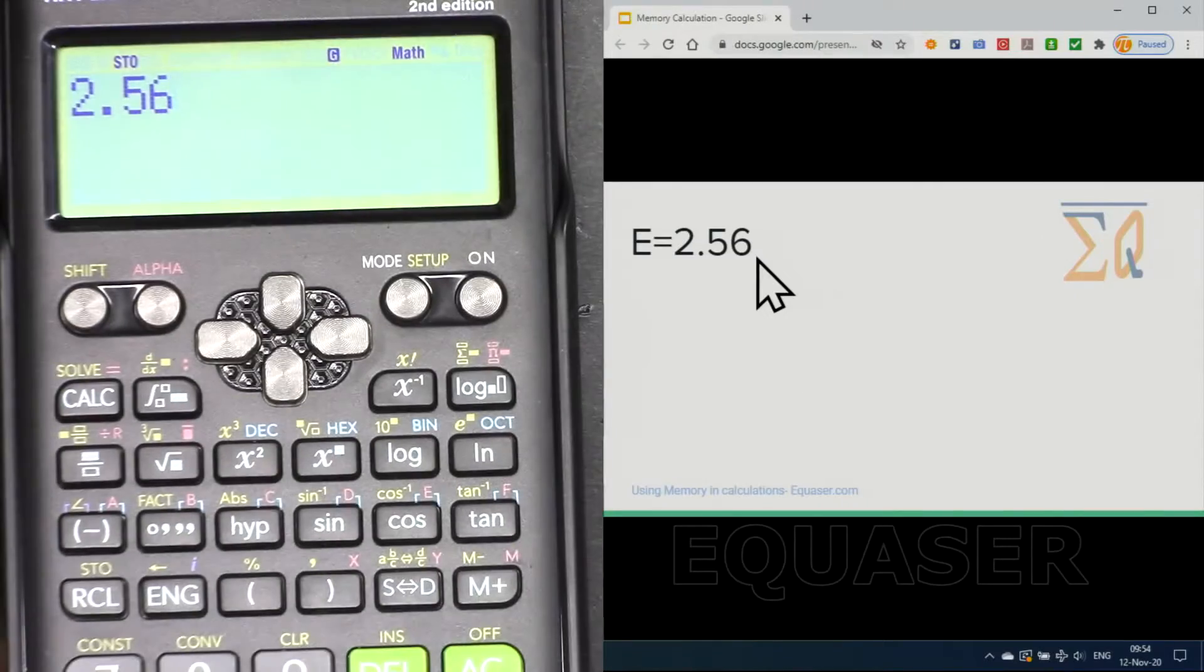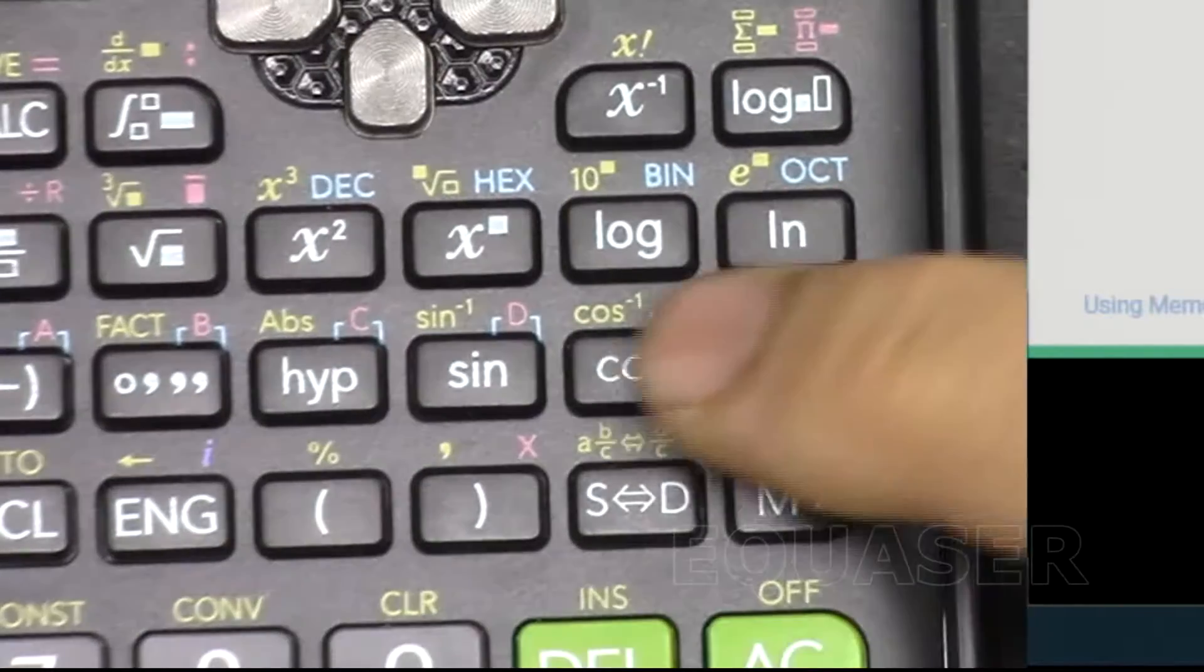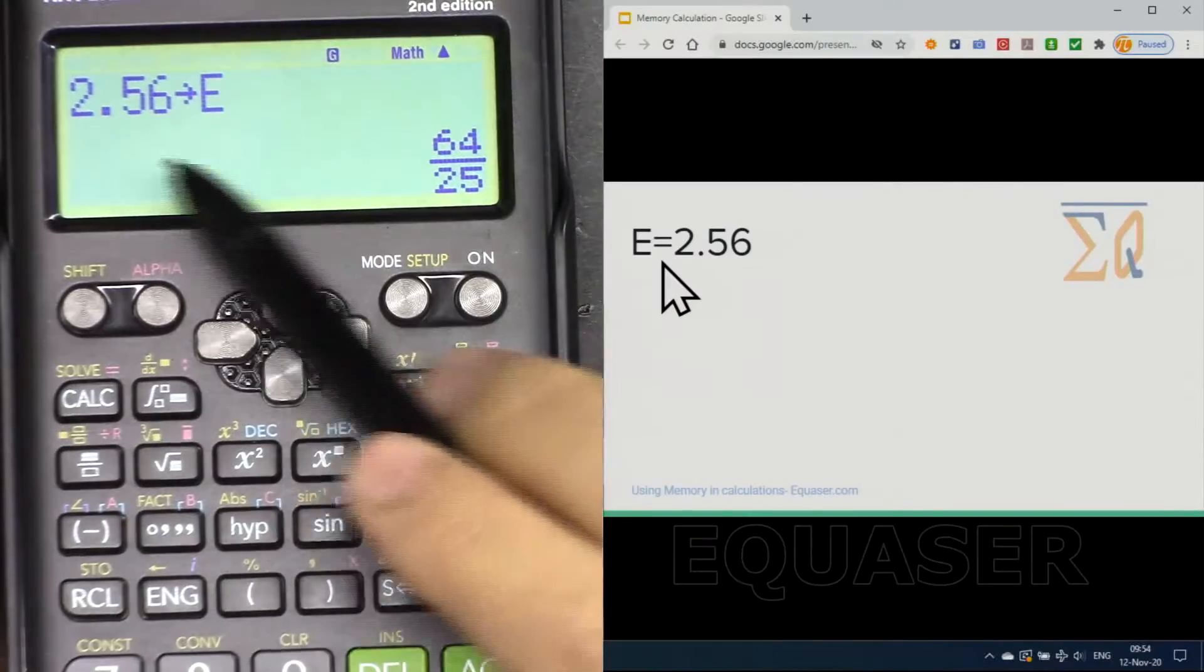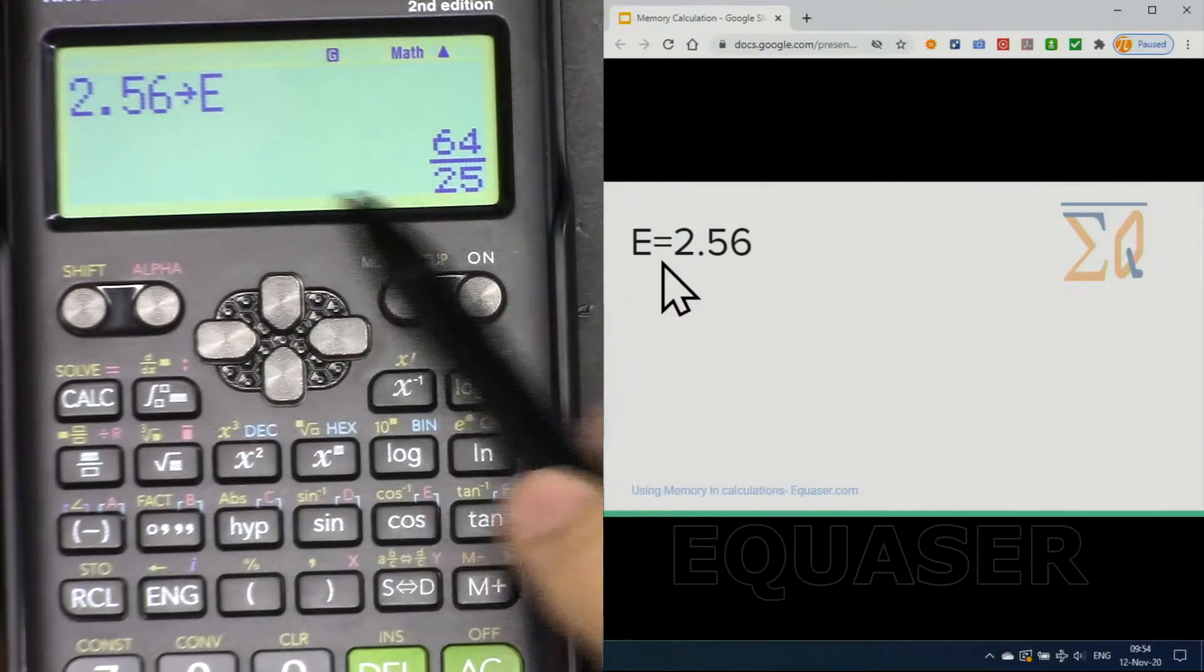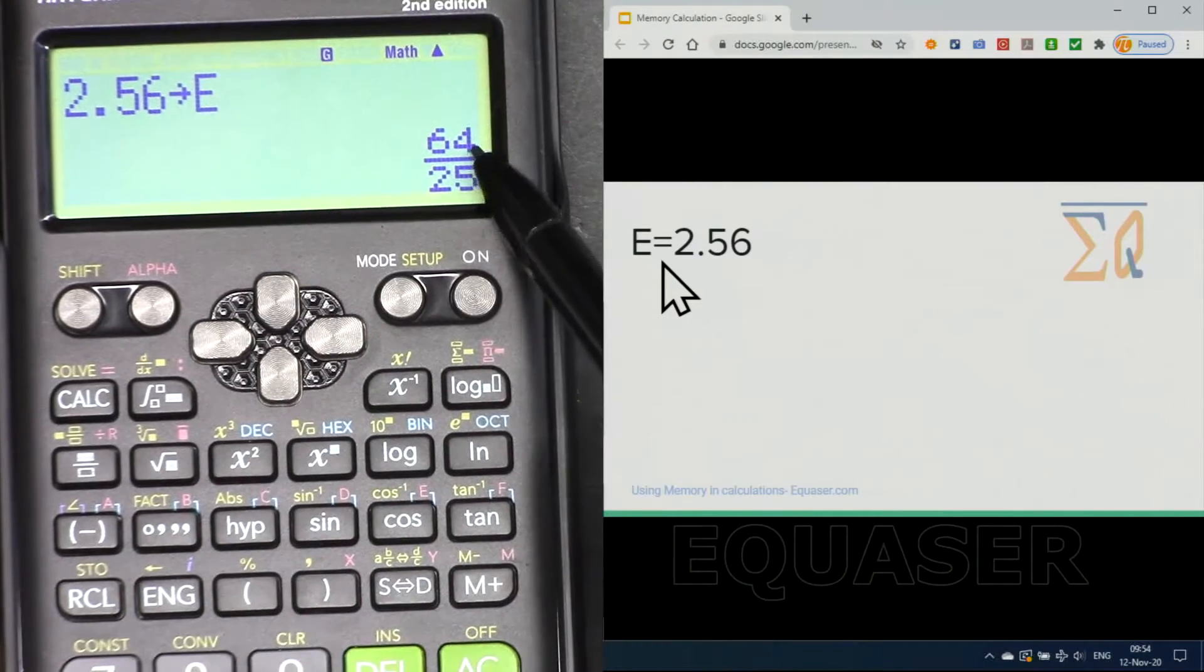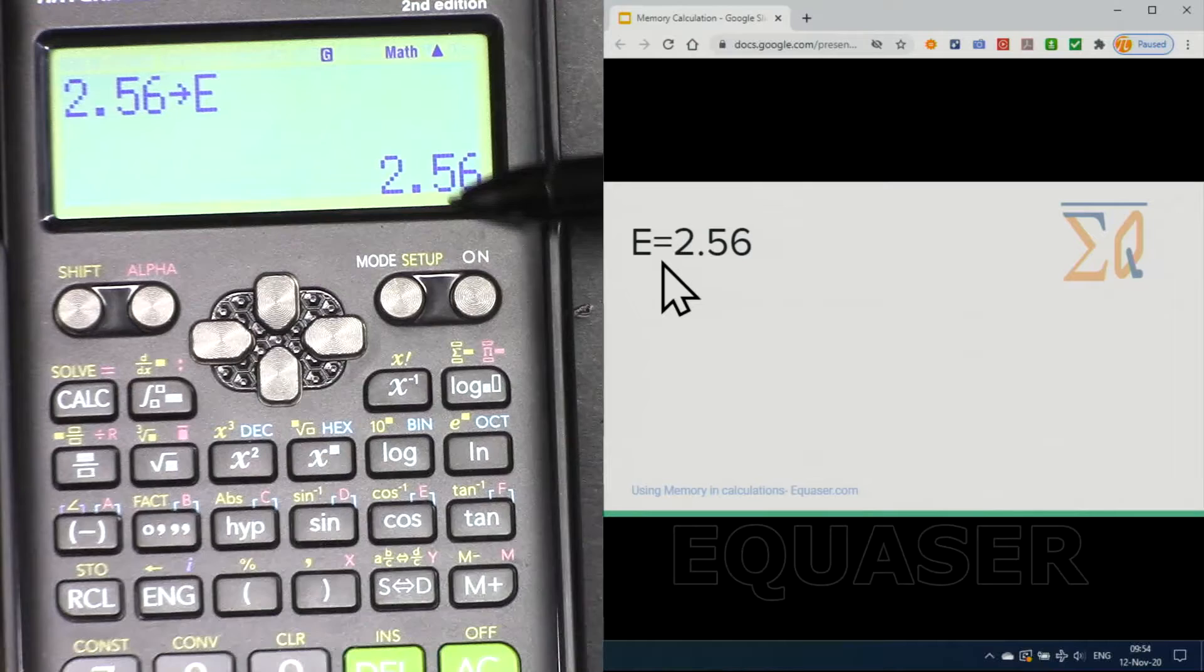Now because I wanted an E, just press the key. It shows that the 2.56 stored into memory E and here is the fraction value. If you want to go back to decimal just press this button, it will change.